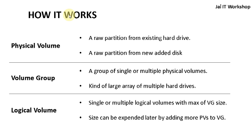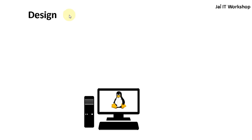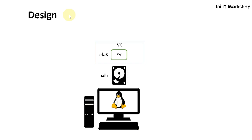Let's understand it in a graphical way. You have a Linux PC — it could be a laptop, desktop, or server. In this system you have one hard drive, usually called sda. The first disk is sda, second would be sdb, third sdc. On sda, let's suppose you have created a boot partition, a swap partition, and a third partition as a physical volume — this would be sda3. On top of it you create a volume group and add this physical volume to it. Then on top of this volume group you create multiple logical volumes as per your requirement.